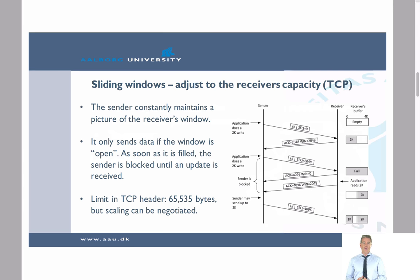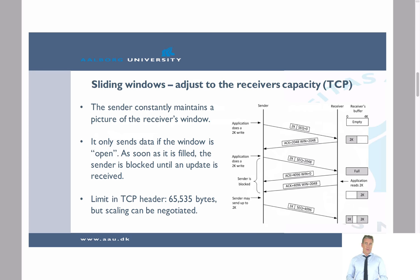Looking at the figure, the sender starts by making a 2KB write to the receiver. This is after the connection is established, during which the sender has been informed of the window size. When the receiver responds with an acknowledgement, it also includes the current window size — in this case, 2KB.